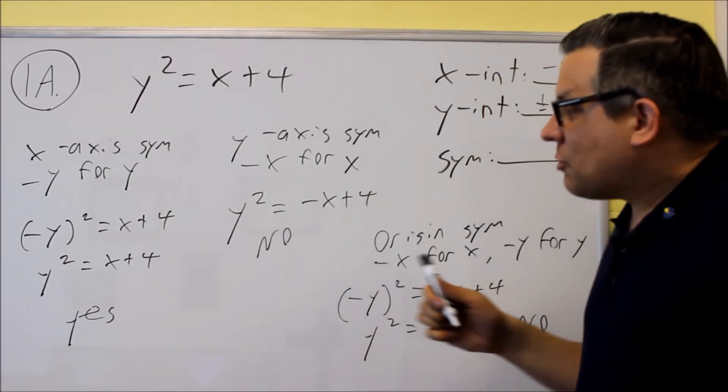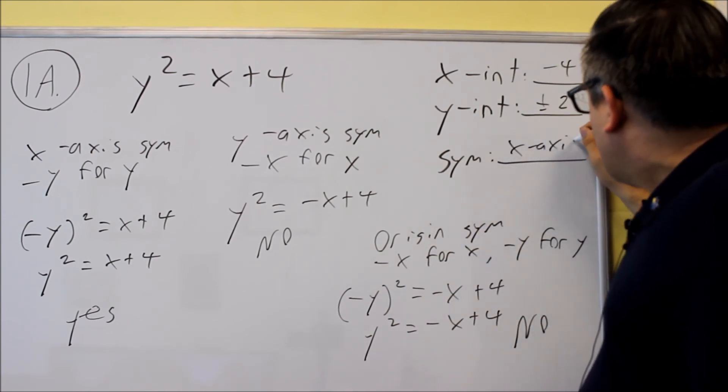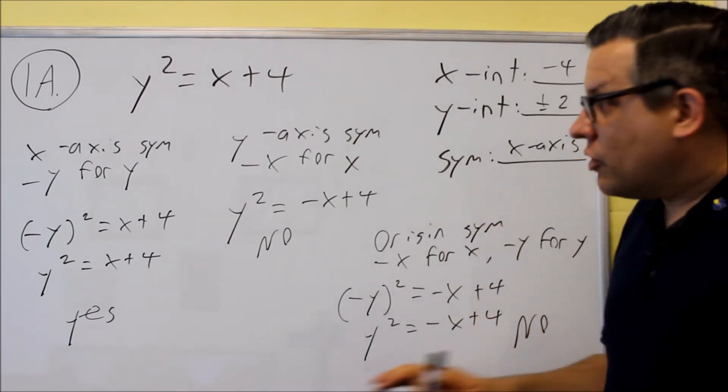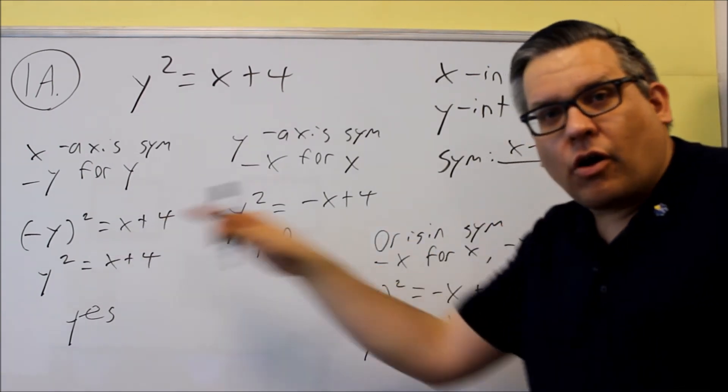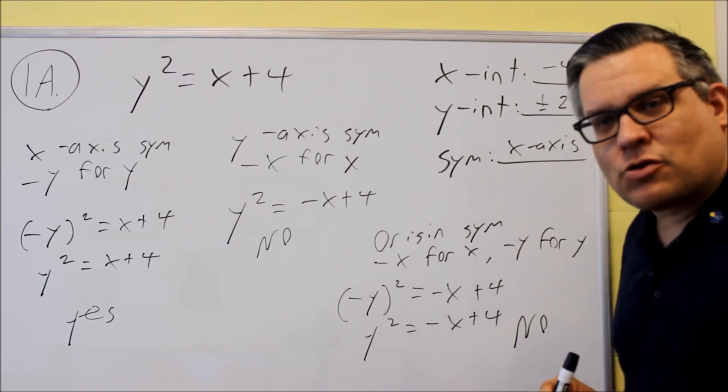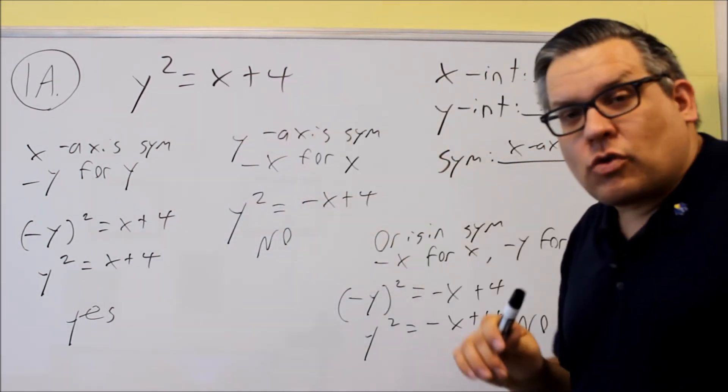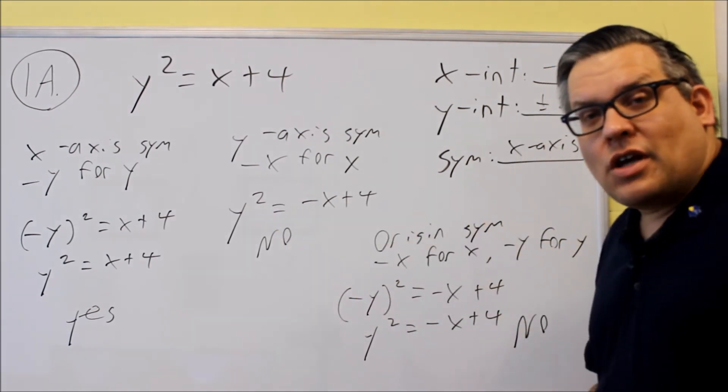So this particular one, the symmetry is going to be, what I put here is x-axis symmetry. Now if you go through all these steps and you get no for all three, then you'd put none for symmetry. But this one clearly, we were able to get this to look like the original one, and so we know for sure it has x-axis symmetry.